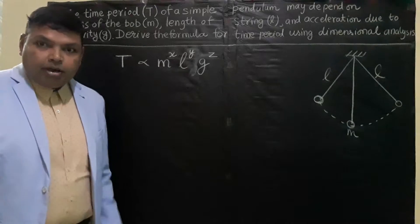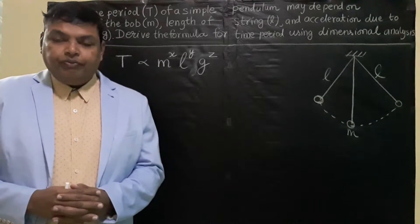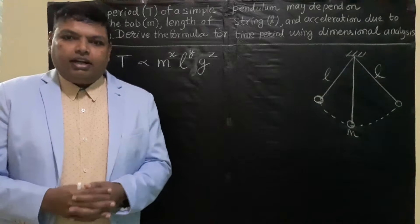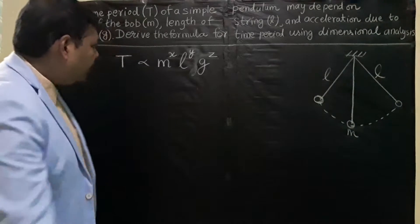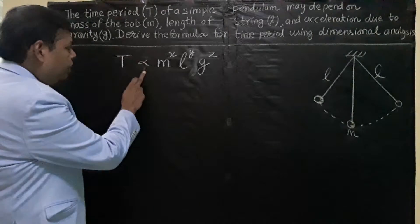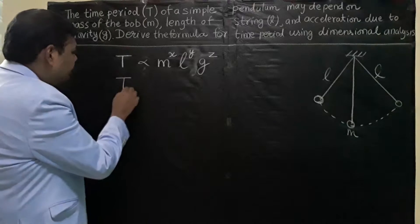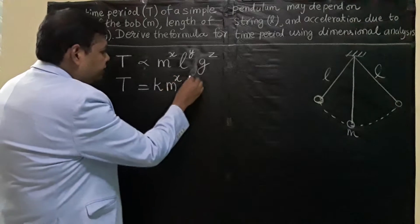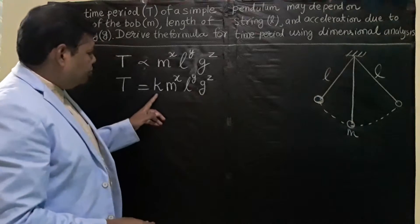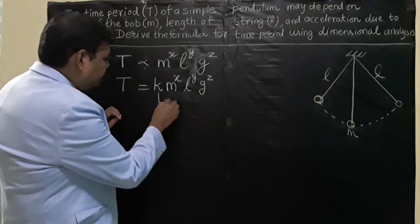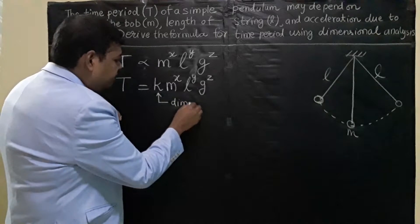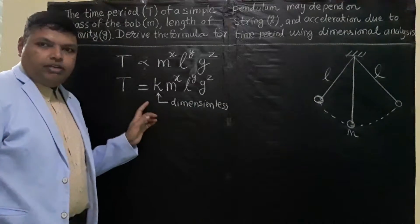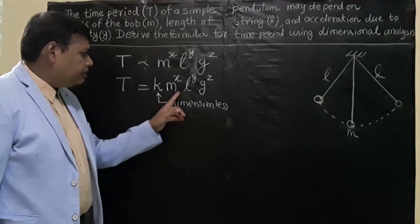In dimensional analysis, there is a rule: whenever we write an equation like this, the dimensions on the left-hand side must equal the dimensions of the right-hand side. To handle the proportionality, we introduce a constant K, so the equation becomes T = K times M^X times L^Y times G^Z. It should be noted that this constant K is a dimensionless constant, because we want the time period to depend only on those three factors which have dimensions.